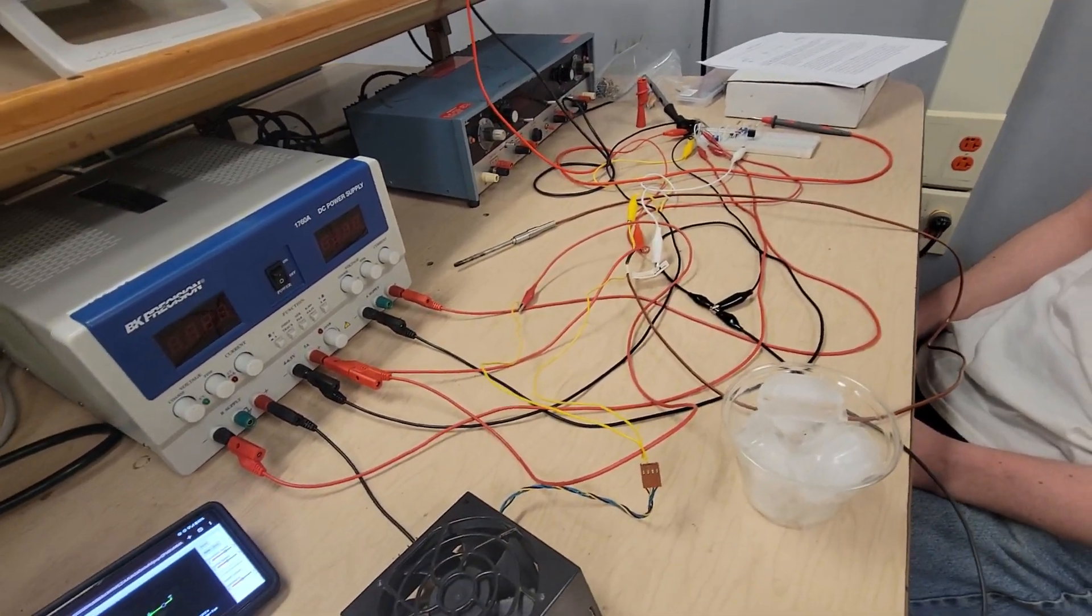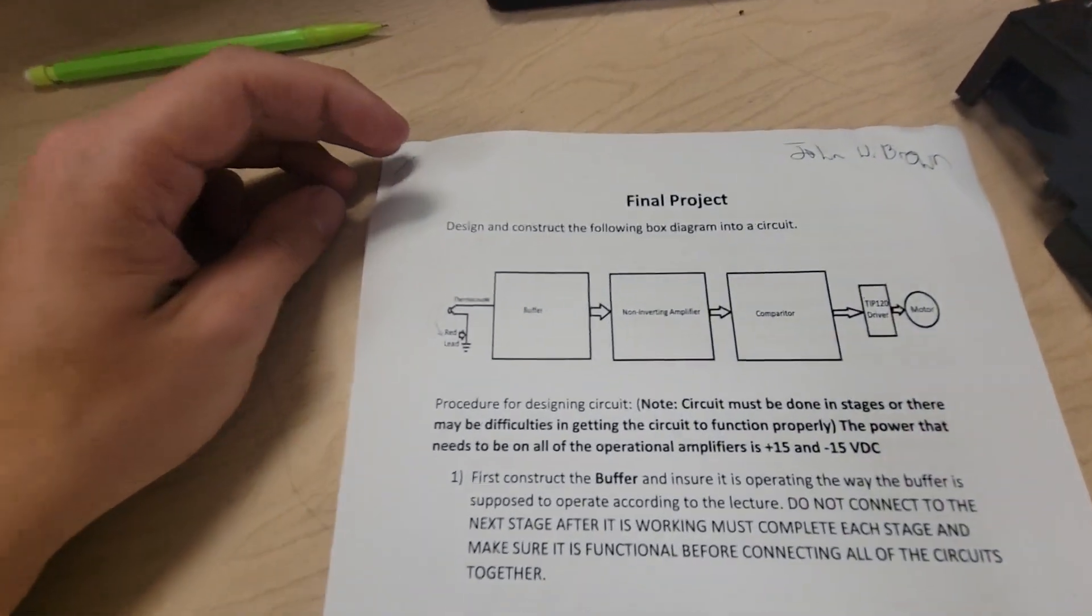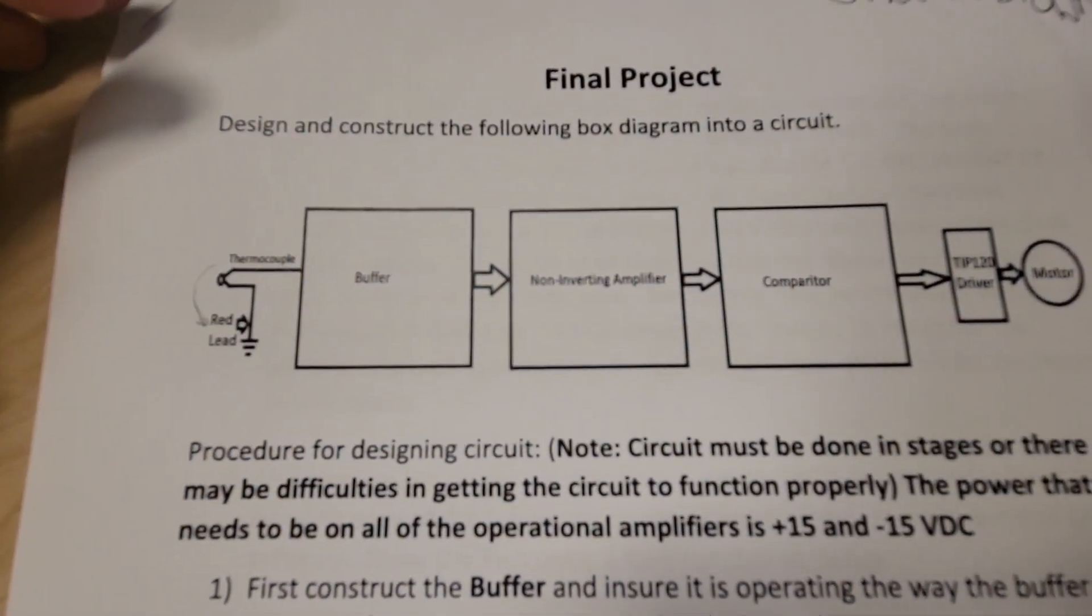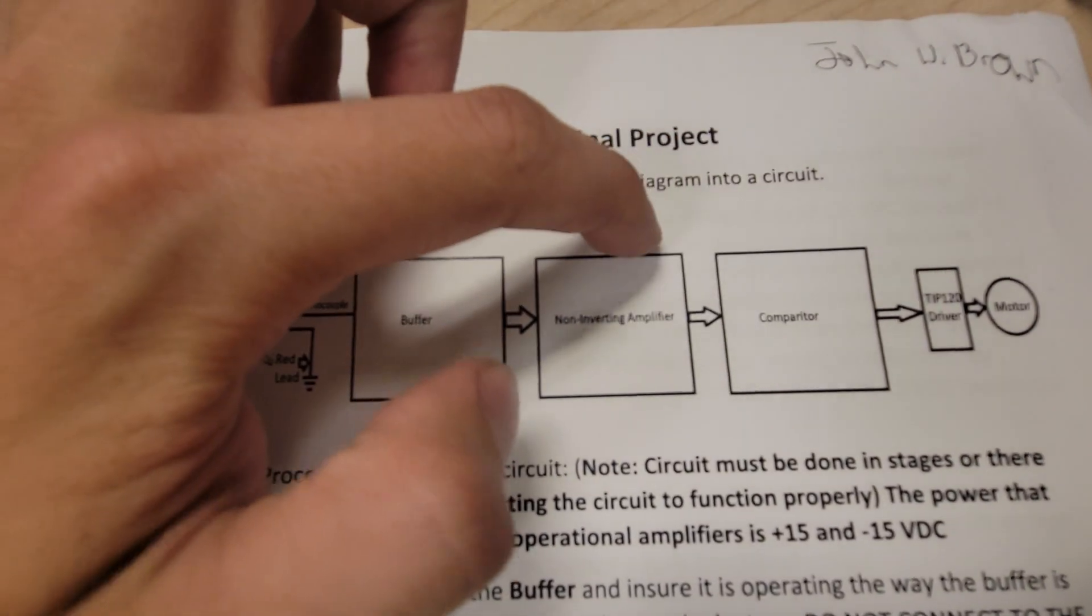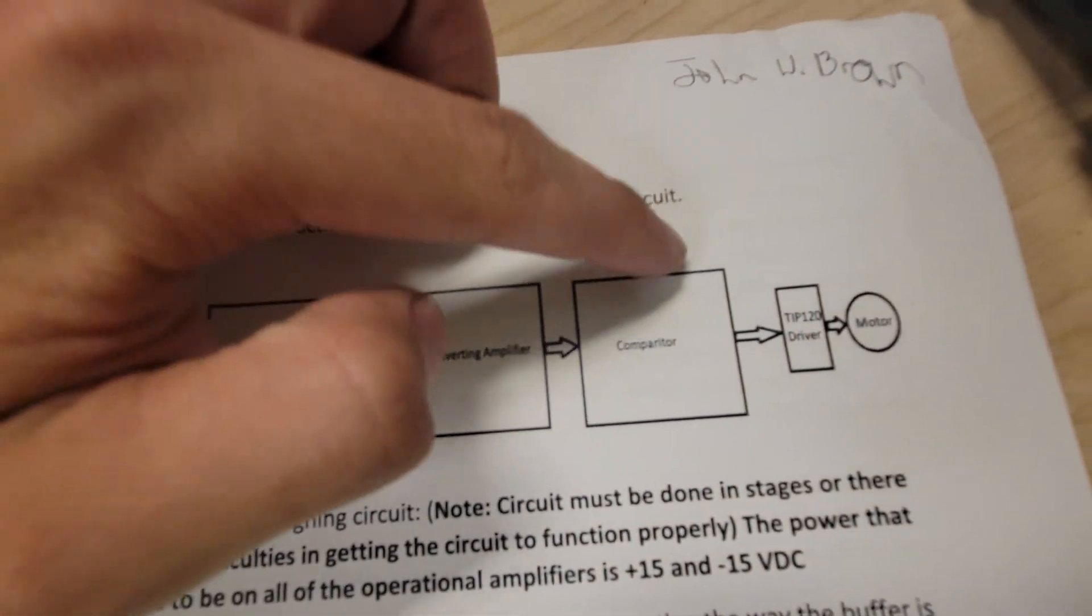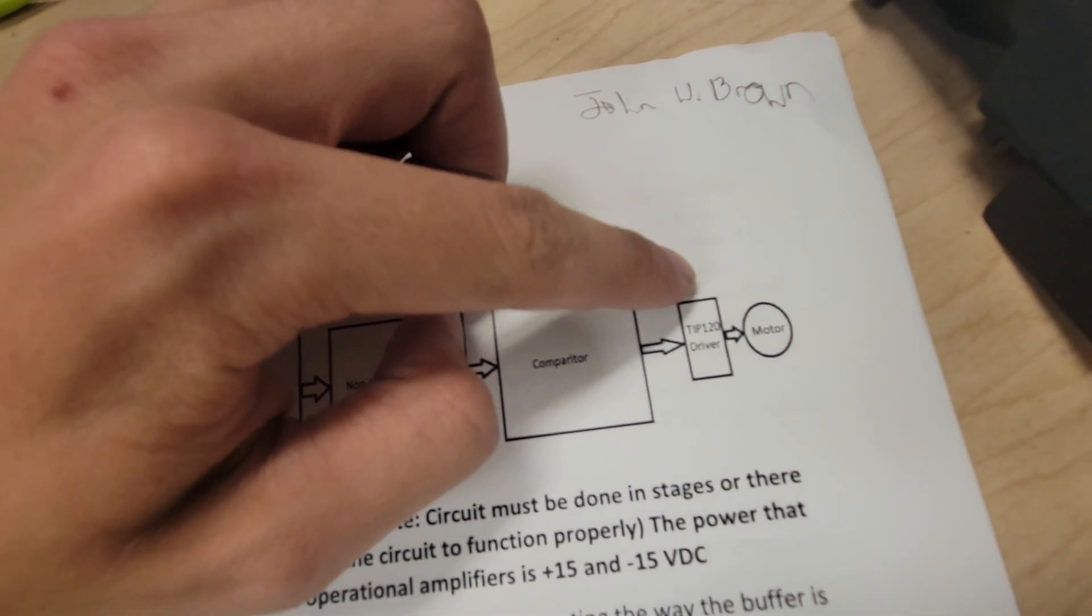To start off our assignment, we had to build a circuit that included a thermocoupler, a buffer, a non-inverting amplifier, a comparator, a tip 120 driver, and a motor.